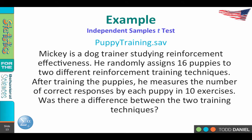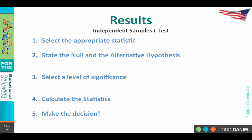Here is the setup for the study we are going to be doing. Mickey is a dog trainer studying reinforcement effectiveness. He randomly assigns 16 puppies to two different reinforcement training techniques, clicker training versus food training. After training, he measures the number of correct responses by each puppy in 10 exercises, meaning each puppy can have a score from 0 to 10. Was there a difference between the two training techniques? Let's find out.